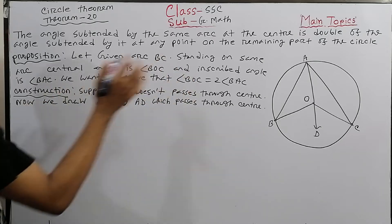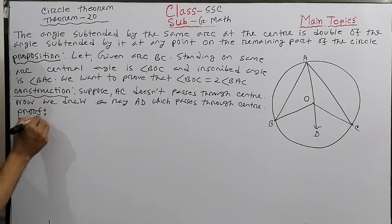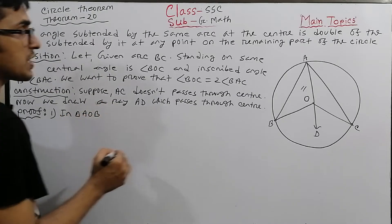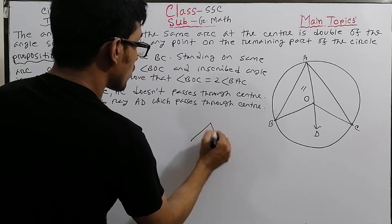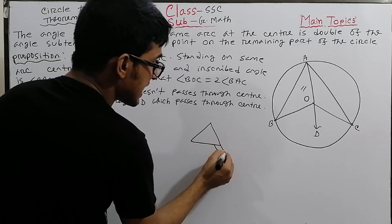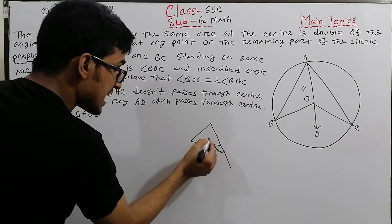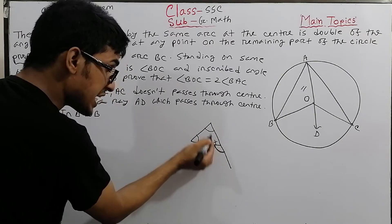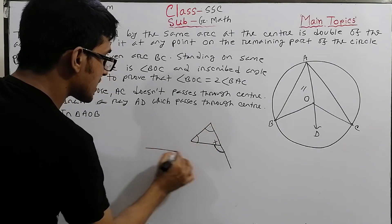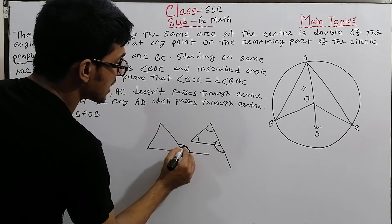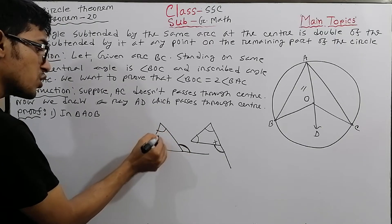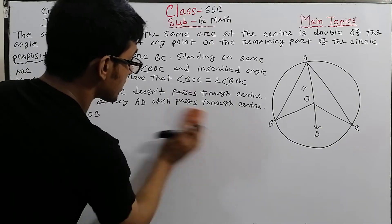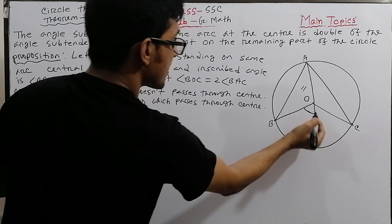Proof Step 1: In triangle AOB, we use the exterior angle theorem. When a side of a triangle is extended, the exterior angle formed is equal to the sum of the two opposite interior angles. So the exterior angle BOD equals the sum of the two interior opposite angles.